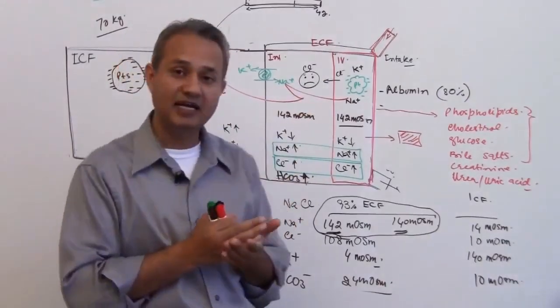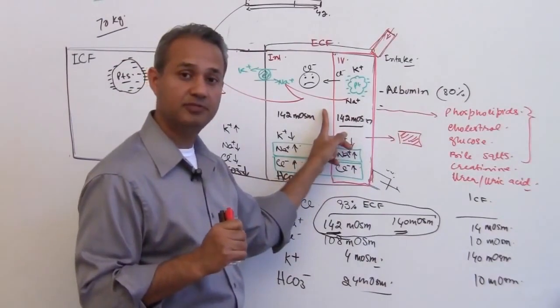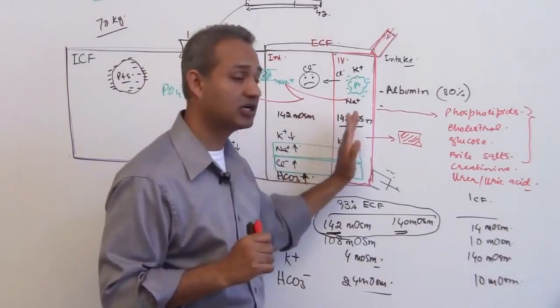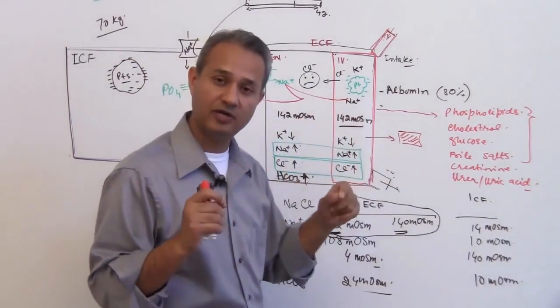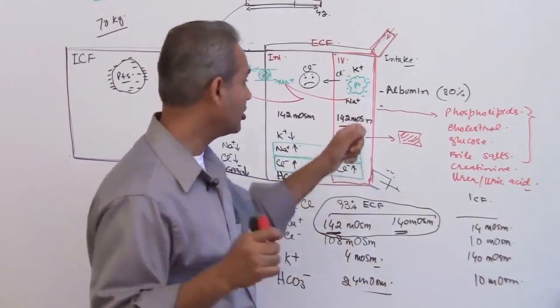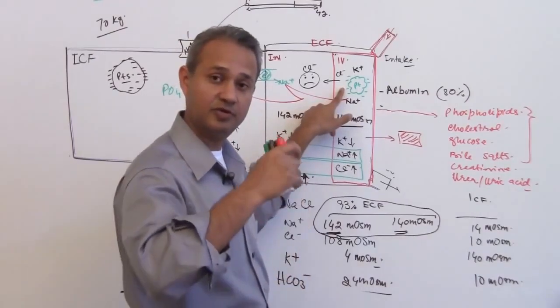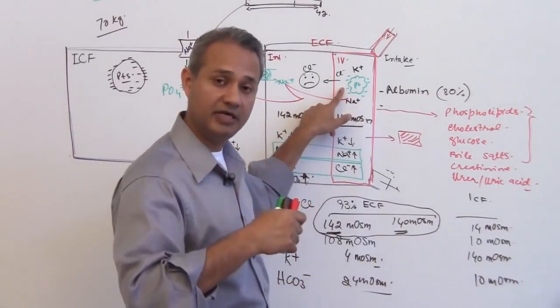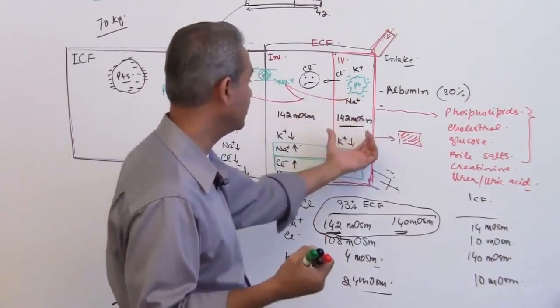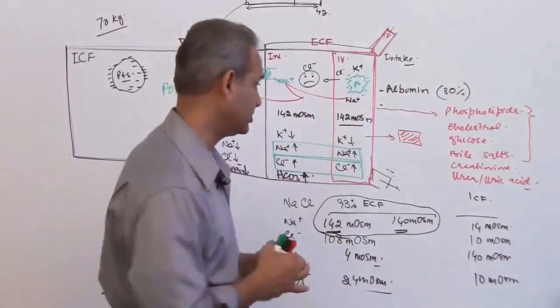The factors which decide how much water gets out of the vessel into the interstitium and how much water comes back are the hydrostatic pressure and the oncotic pressure. The oncotic pressure is the pressure on the water exerted by the proteins, and the hydrostatic pressure is the pressure exerted on a fluid present in a pipe due to the diameter.